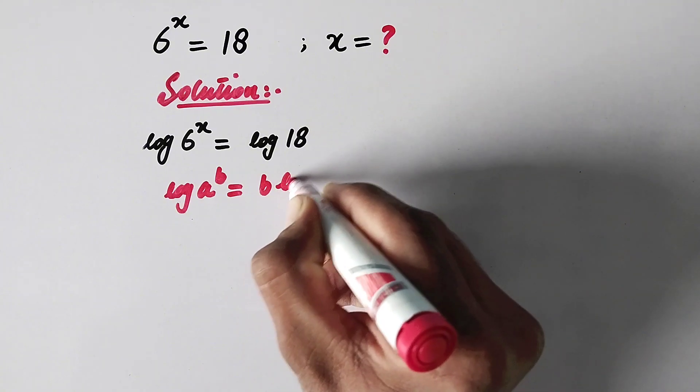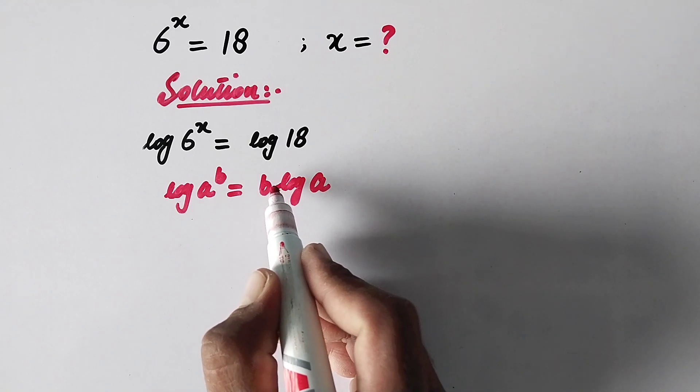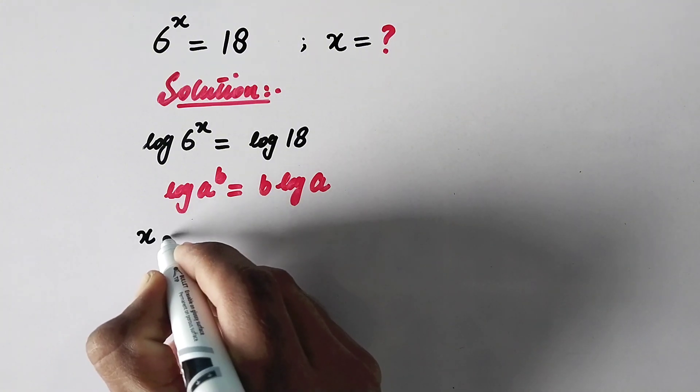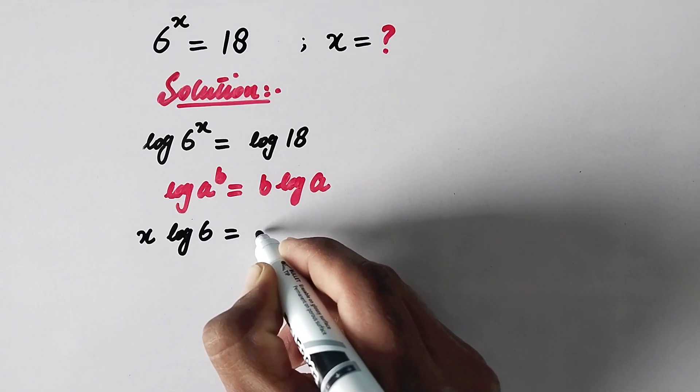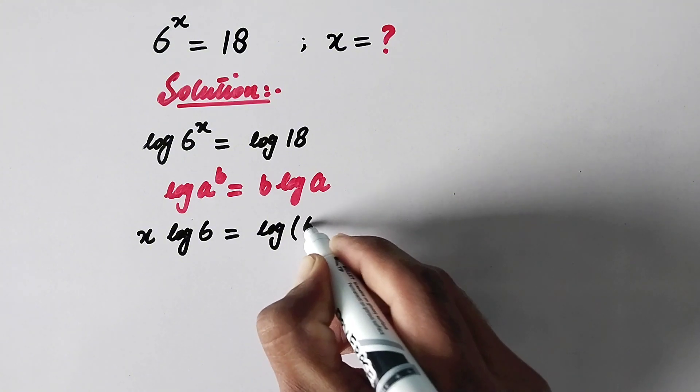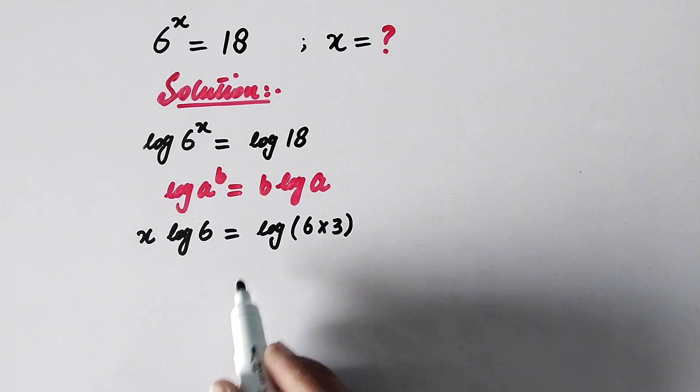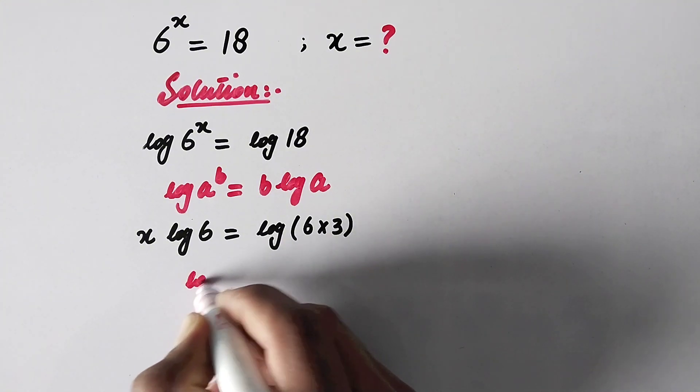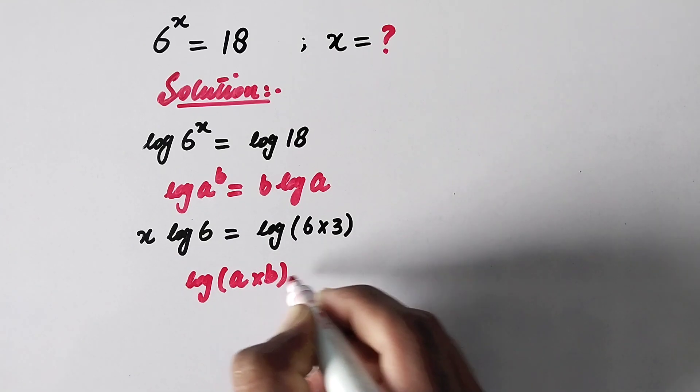By using this property, we can write x times log of 6 is equal to log of 18, which is the same as 6 times 3.